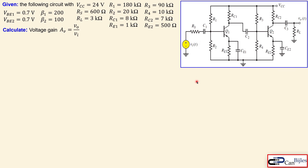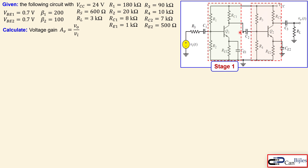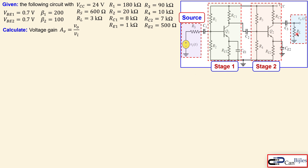We have this circuit given — it has a two-stage configuration. The first stage uses the common emitter configuration we discussed in previous videos. The second stage is AC coupled via capacitor C2. We also have our source modeled as a Thevenin equivalent circuit with RS as the output resistance, and RL as the load resistor. The transistor beta values and resistor values are shown here, and we have one DC source VCC at 24 volts. We want to calculate the voltage gain VO over VI.